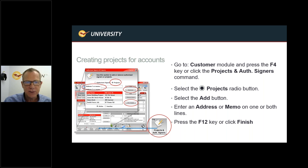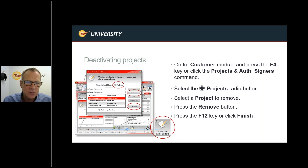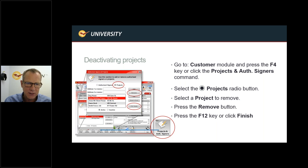Projects are associated with your charge account customers, though you can do it for non-charge account customers as well. If a job or project goes away and you no longer want it to show up on the list, you can deactivate those projects very simply. Go to the customer module, go to the Projects radio button, highlight the project you no longer want, hit the Remove button, and finish — that's it.